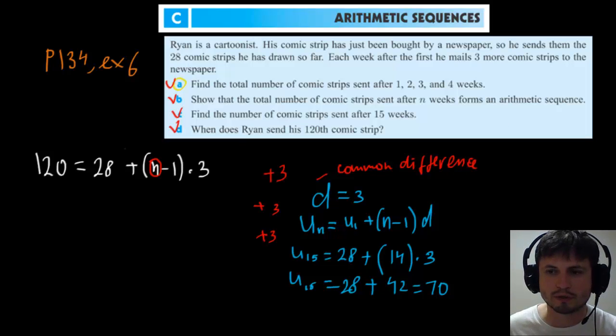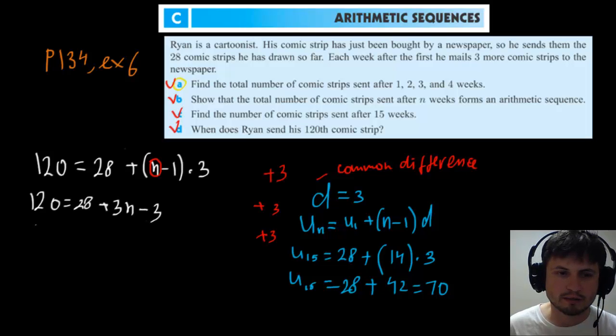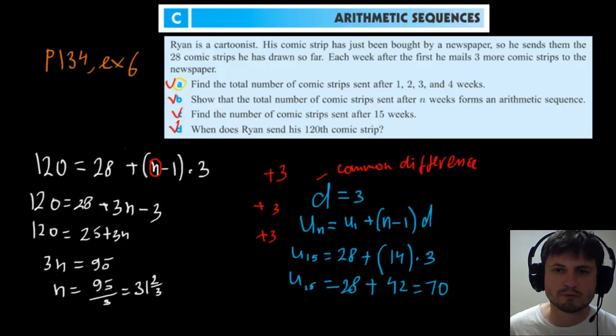So here what we're doing is we're writing 120 equals to 28 plus n minus 1 times 3. And we're looking for n. So we just have to solve for n. Now here you can obviously use your GDC if you wanted to, and solve it using polysmilarity or even Y1 function that we used before to solve for linear equations. But I'm just going to do it manually and show you how to do this manually. So basically you can expand the brackets and this will be plus 3n minus 3. 120 equals to 25 plus 3n. 3n equals to 95 and n equals to 95 divided by 3, which is 31 and two thirds. So what this means is that after about 31 weeks and two thirds, he will have completed his 120th comic strip and essentially this is the answer to the problem.